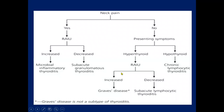If there is neck pain, we should go for radioiodine uptake. If it is increased, then some microbial inflammatory thyroiditis may be present; if it is decreased, then subacute lymphocytic thyroiditis is suspected. In the absence of symptoms of hyperthyroidism, radioiodine uptake will differentiate between Graves disease and subacute lymphocytic thyroiditis.